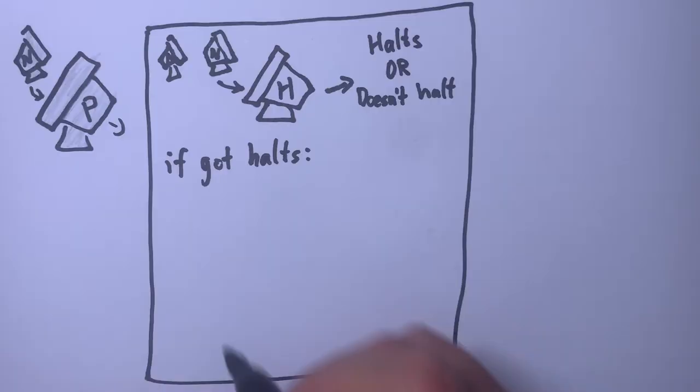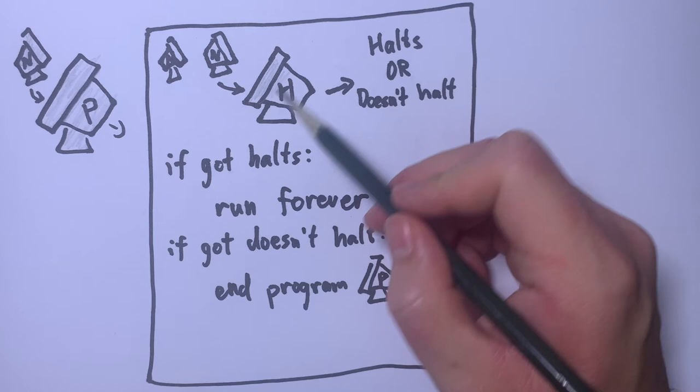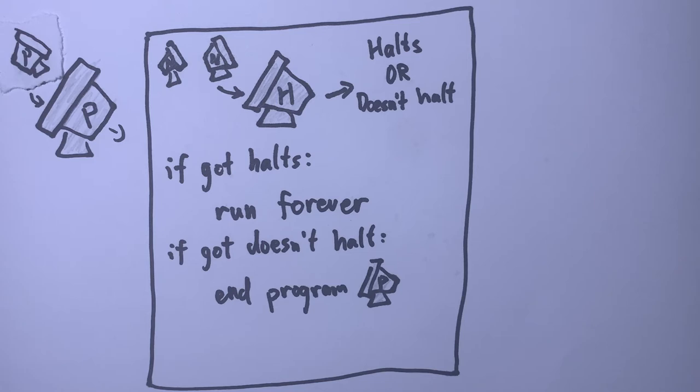Now we ask the question, what happens when you pass P into itself? Well, according to what we wrote here, it first checks whether P halts on P's own source code. We don't know whether it does, so let's consider both possibilities.